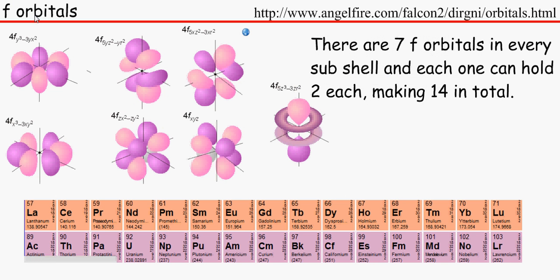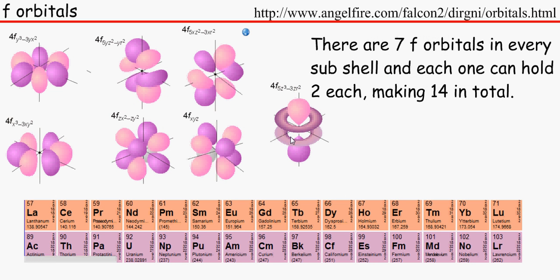And looking at the F orbitals, look how even more complicated they are. You do not really need to learn the F orbitals. Because that won't come up in the exam. But all you just need to know is that there are 7 F orbitals in every subshell. And each orbital can hold 2 electrons because there are opposite spins. So that makes 14 in total.